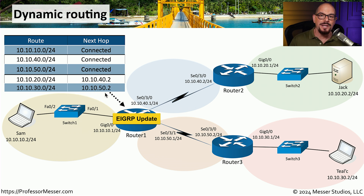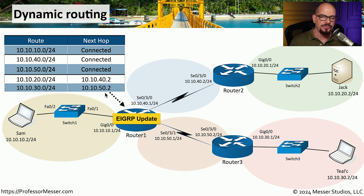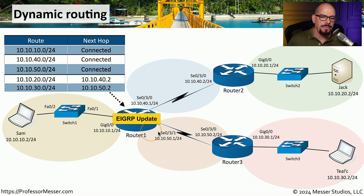All of these updates occurred in real time behind the scenes without any type of user intervention. And if we happen to add or remove routers from this network, the routing table will be updated with an additional EIGRP update that will either add or remove those routes from the table.